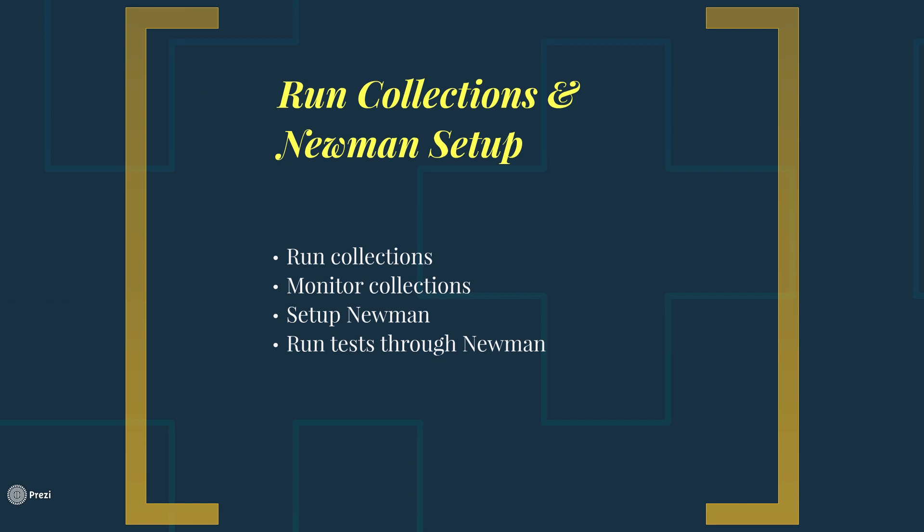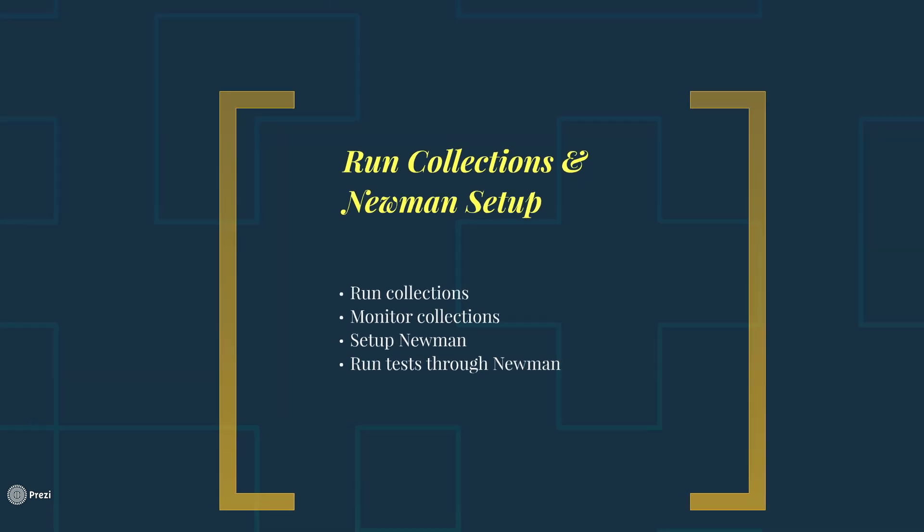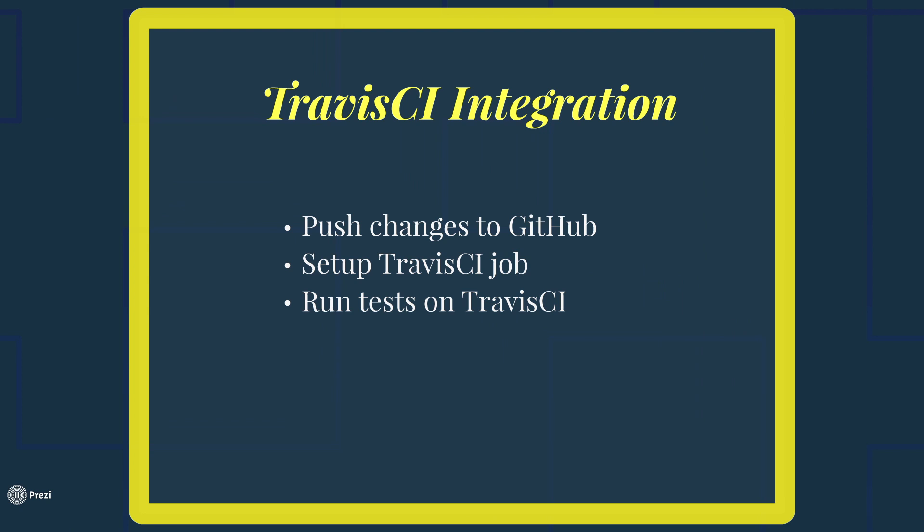Then we will talk about how we can run collections and set up Newman. We will talk about how we can actually run those collections and monitor them. And once this is all set up, we can start learning about Newman, which allows us to run our collections directly — so we will take a look at how we can run tests through Newman. Finally, we will talk about how we can integrate our tests with Travis CI. We will push all the changes — the Newman changes and all the API changes — to GitHub, set up our Travis CI job, and then run our tests on Travis CI.